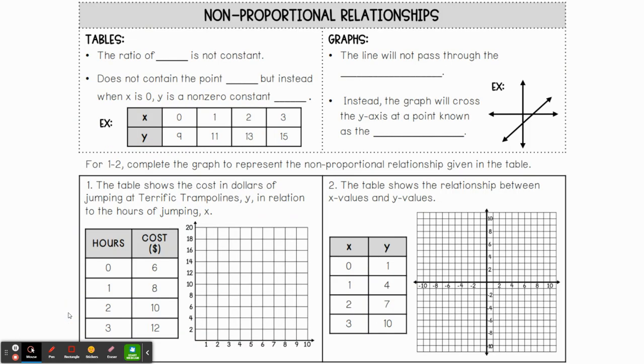And we're going to see this throughout this lesson today. All of these examples are going to be non-proportional. But let's go ahead and fill in some of these up here because I want to make some notes about what a non-proportional relationship looks like. So first off, the ratio of Y over X is no longer constant. And this only applies when we're talking about non-proportional relationships. Now, you can still try to do Y divided by X and find those numbers, but it's not going to work for a table or a graph that is non-proportional. So in other words, when we're talking about non-proportional, it does not contain the point zero, zero. But instead, when X is zero, Y is going to be a non-zero constant.